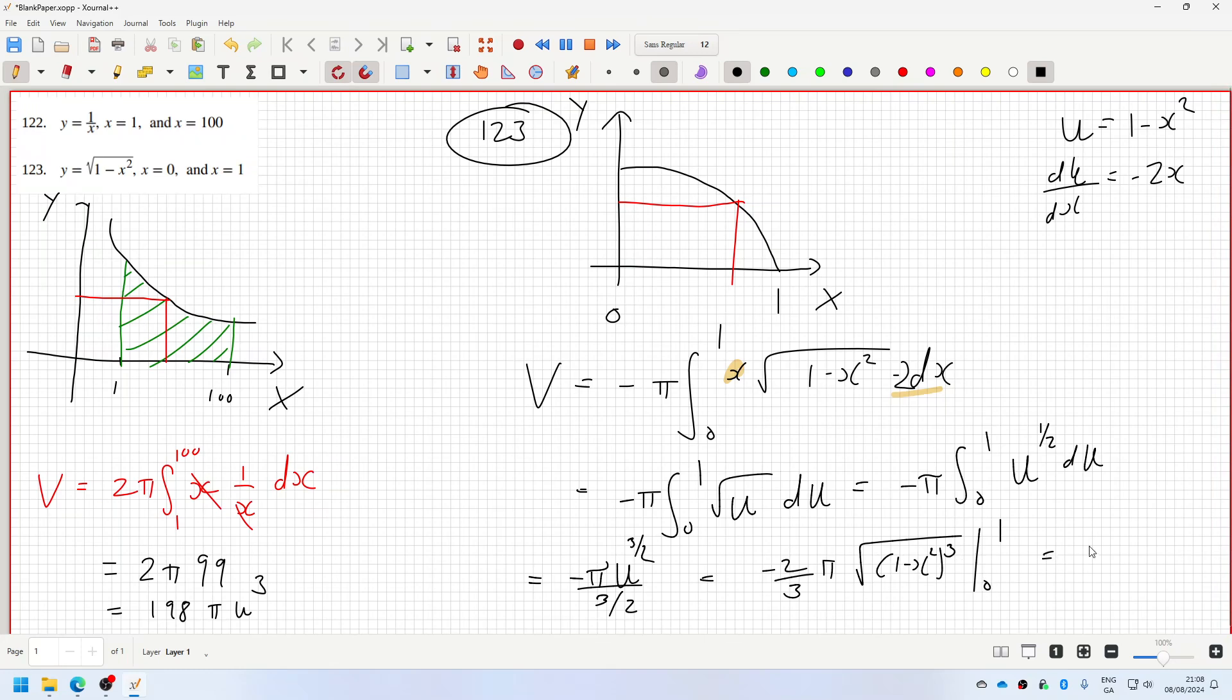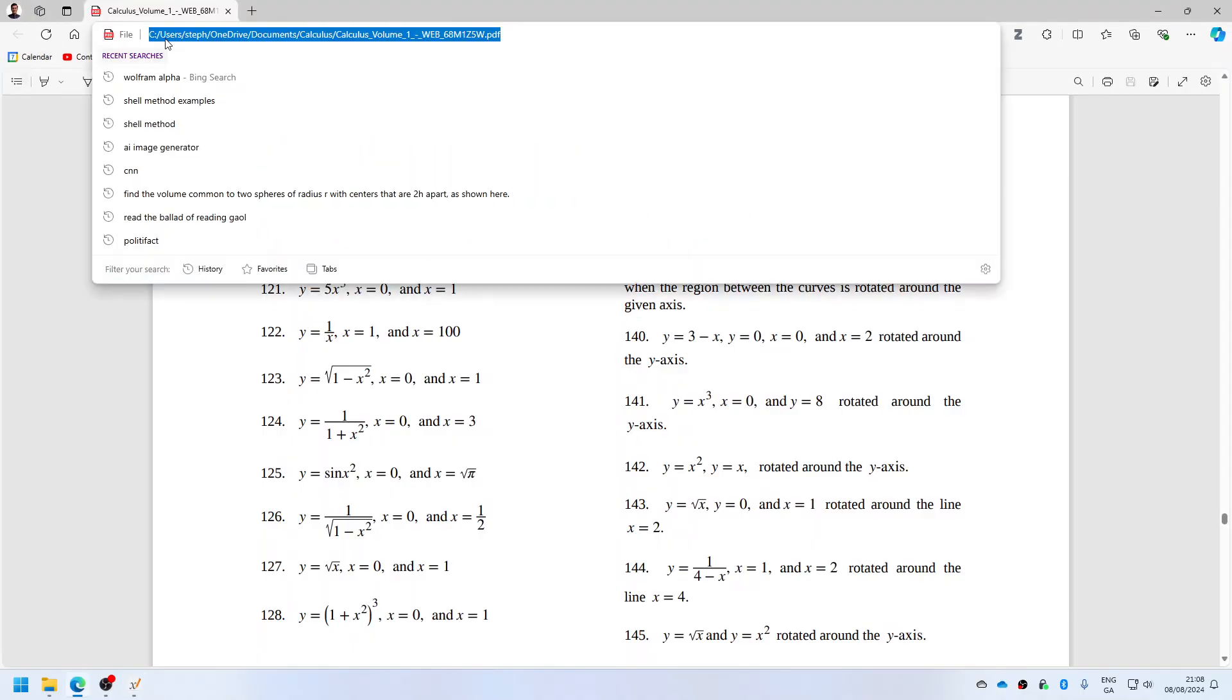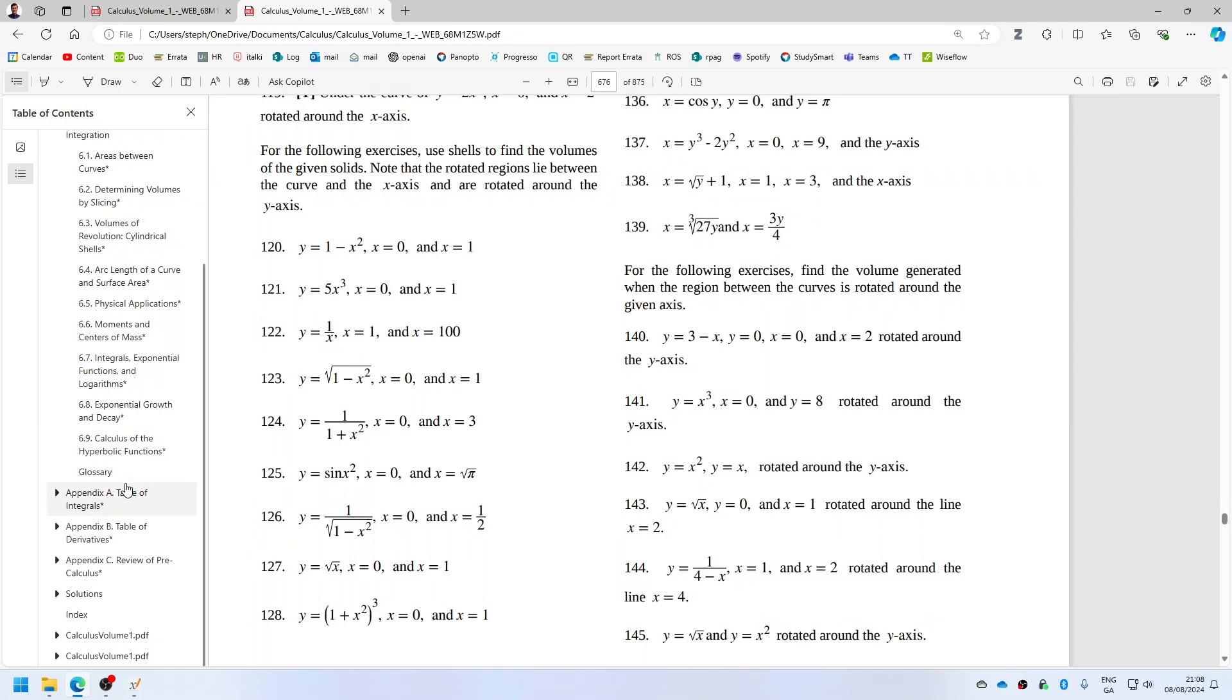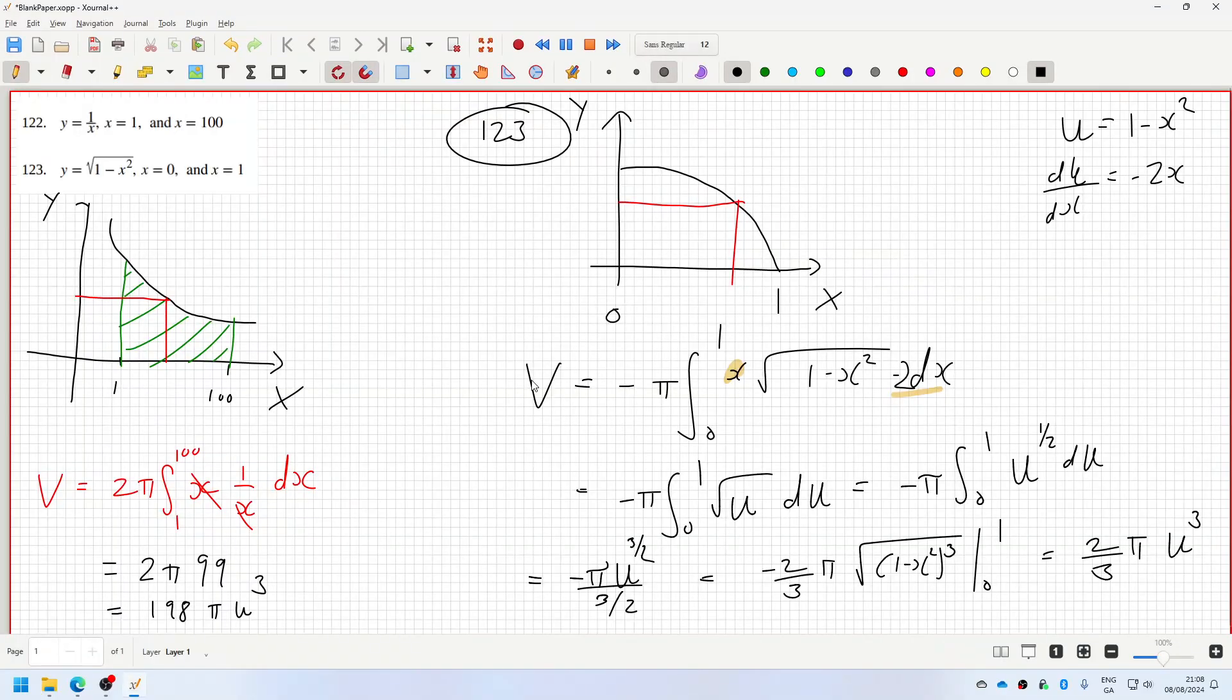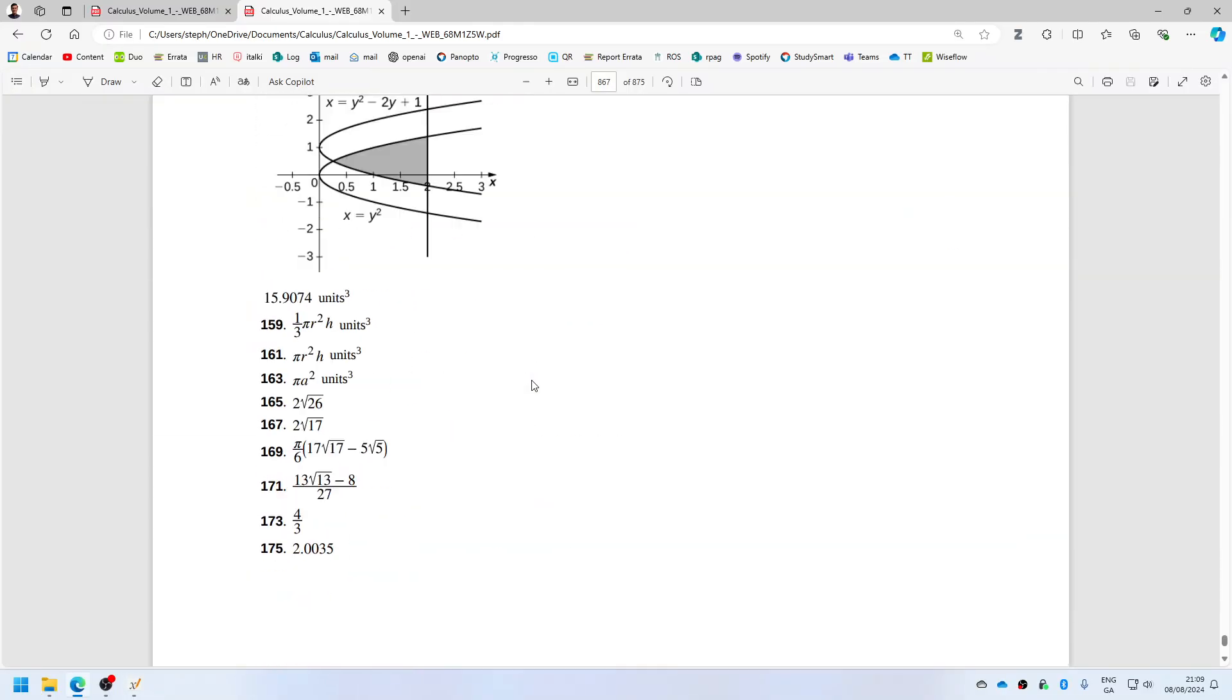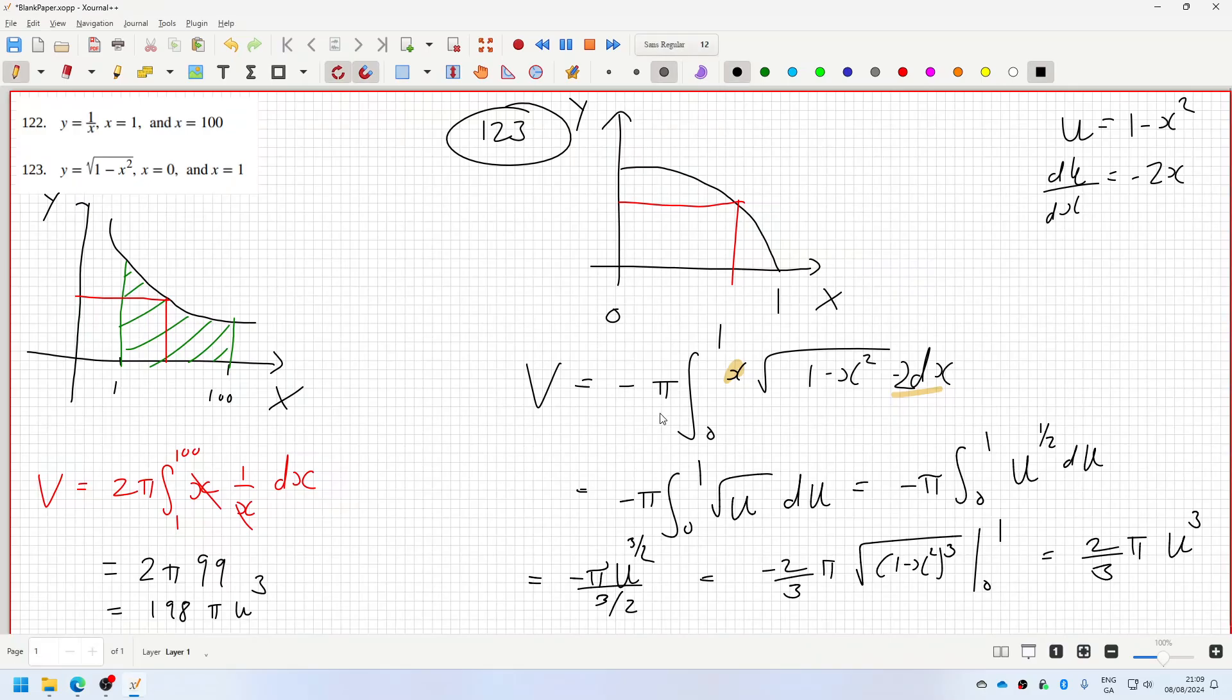So if I put in zero, it'll just be two-thirds pi u cubed. Let's see... two-thirds pi units, two-thirds pi units cubed.